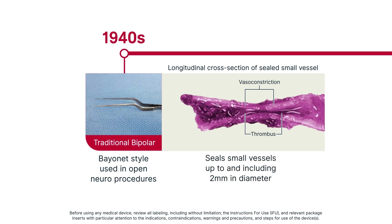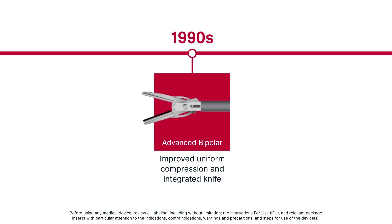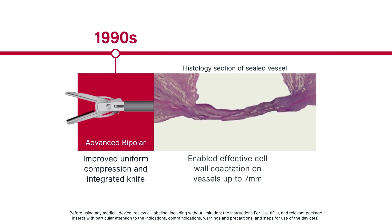Additionally, a separate cutting tool was required to transect the sealed tissue. By the 1990s, advanced bipolar devices were introduced, which offered improved uniform compression and an integrated cutting mechanism to enable surgical efficiency. Reliable compression enabled effective cell wall coaptation for stronger seals on larger vessels up to 7 millimeters.